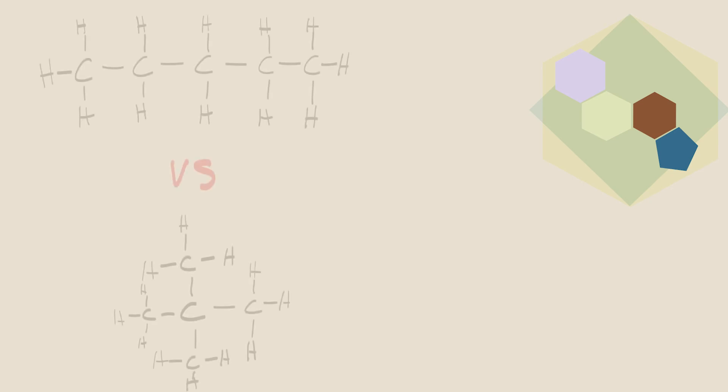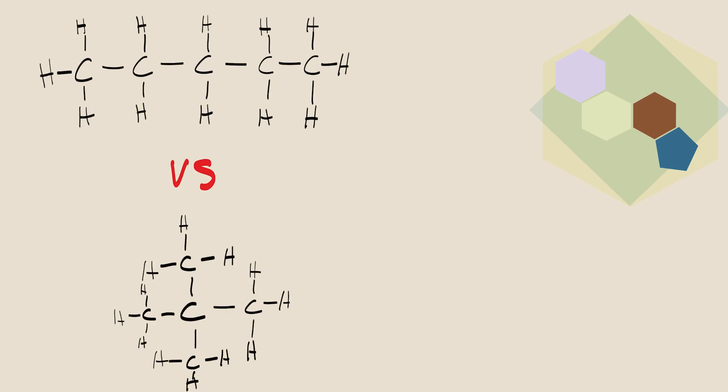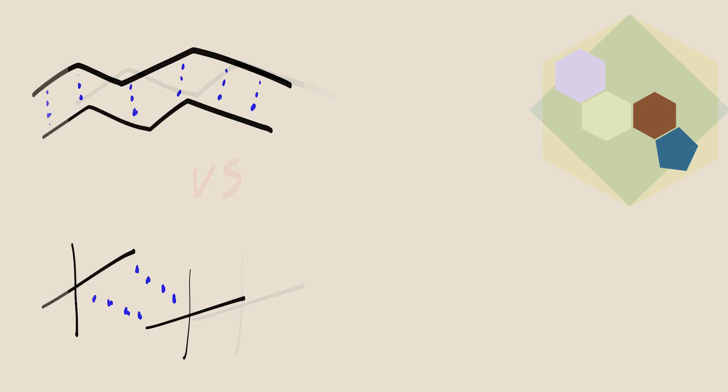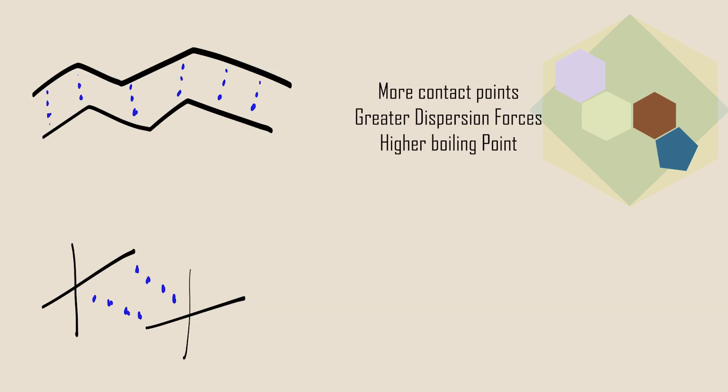For nonpolar molecules with the same molar mass, the strength of the dispersion forces is influenced by molecular shape. Shapes that allow more points of contact have more area over which to form dispersion forces. Finally, we will look at some examples comparing boiling points between two substances and explain the observation based on intermolecular forces.